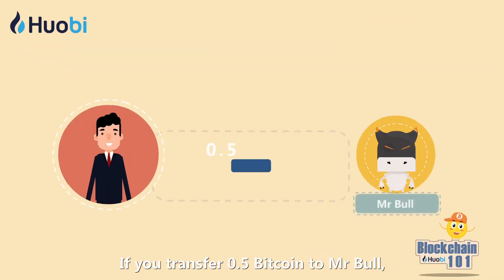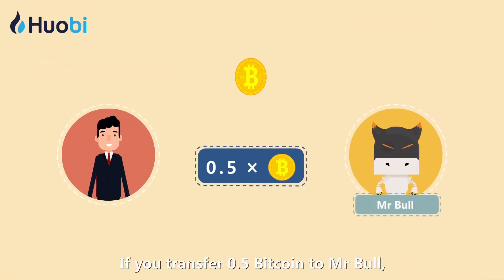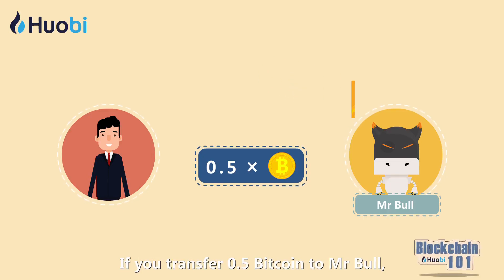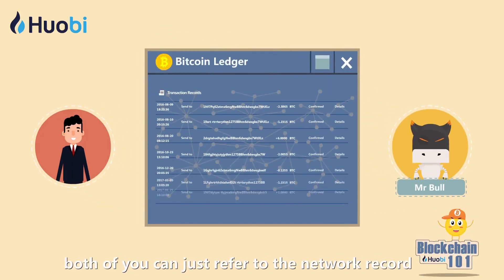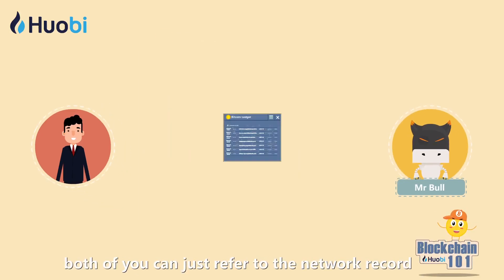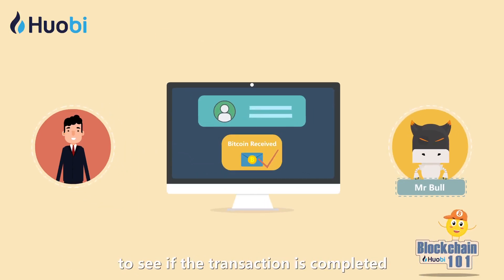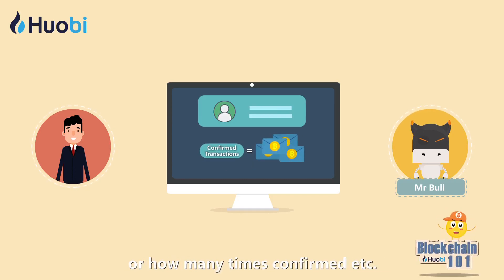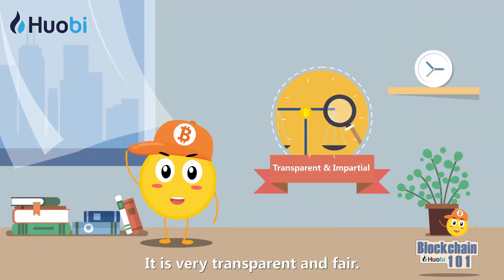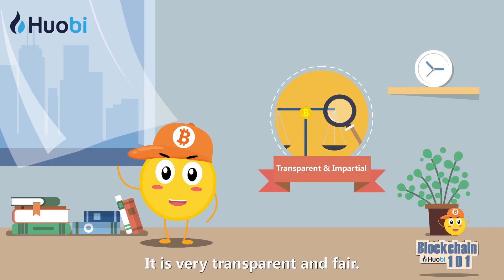If you transfer 0.5 Bitcoin to Mr. Bull, both of you can just refer to the network record to see if the transaction is completed, the number of confirmations, etc. It is very transparent and fair.